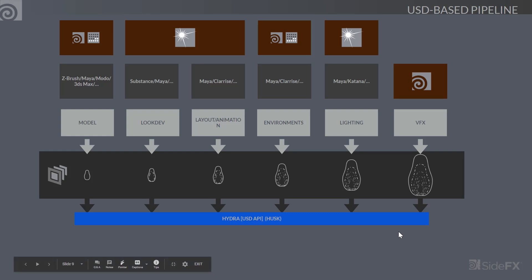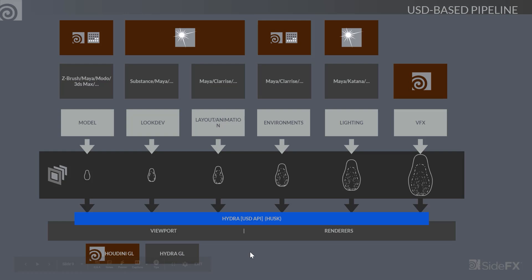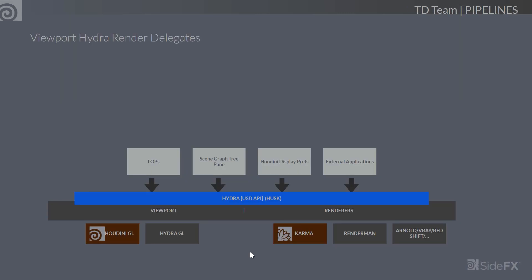Going all the way back to the first statement: this whole thing only exists for artists, and artists need to see work and generate images or model content. Hydra feeds viewports and also feeds renderers — those are all the Hydra delegates used to generate imagery. There's Houdini GL and Hydra GL for the viewport. As for renderers, there's Karma, RenderMan, Arnold, V-Ray, and Redshift — we'll talk more about those delegates in a bit.